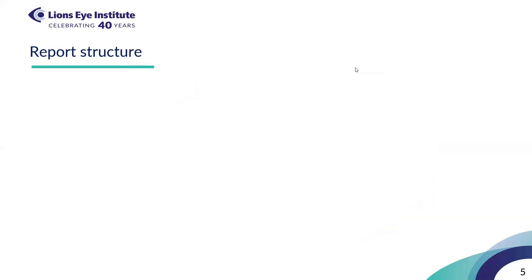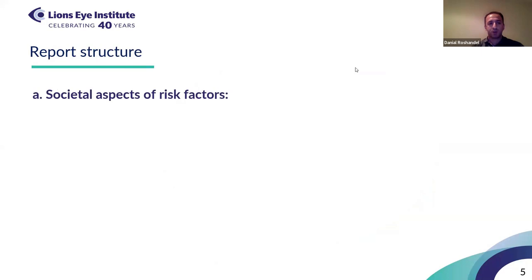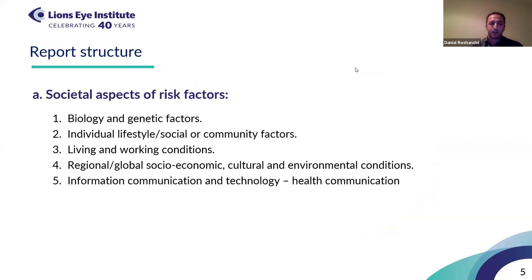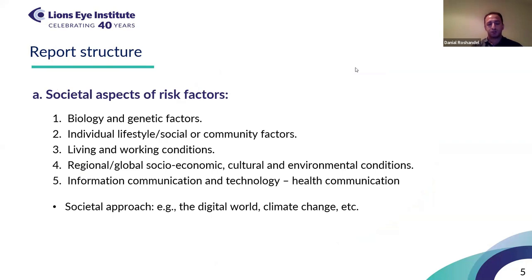The report was structured in two main parts. The first part evaluates the role of different societal factors as risk factors for ocular surface diseases at those five levels I've mentioned. As you might notice, lots of these conditions overlap with the other subcommittee reports that will be discussed in the next few days, but tonight I will be looking at all of these factors from the societal aspect.